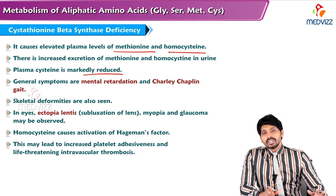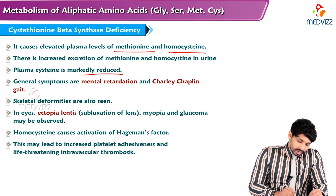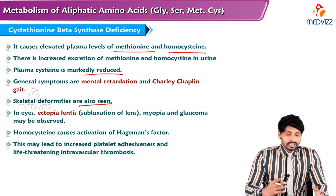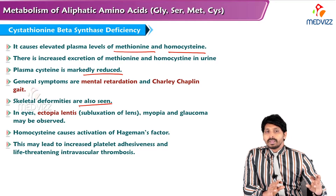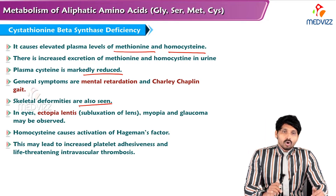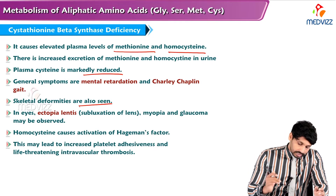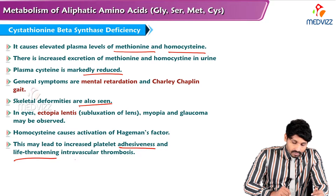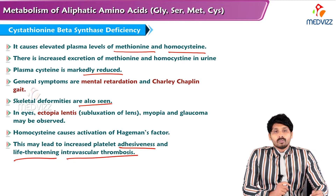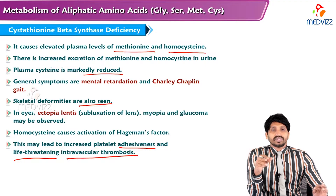General symptoms include mental retardation and Charlie Chaplin gait. Skeletal deformities can also be seen. In the eyes, ectopia lentis, subluxation of lens, myopia, and glaucoma may be observed. Homocysteine causes activation of Hagemann's factor, which may lead to increased platelet adhesiveness and life-threatening intravascular thrombosis.